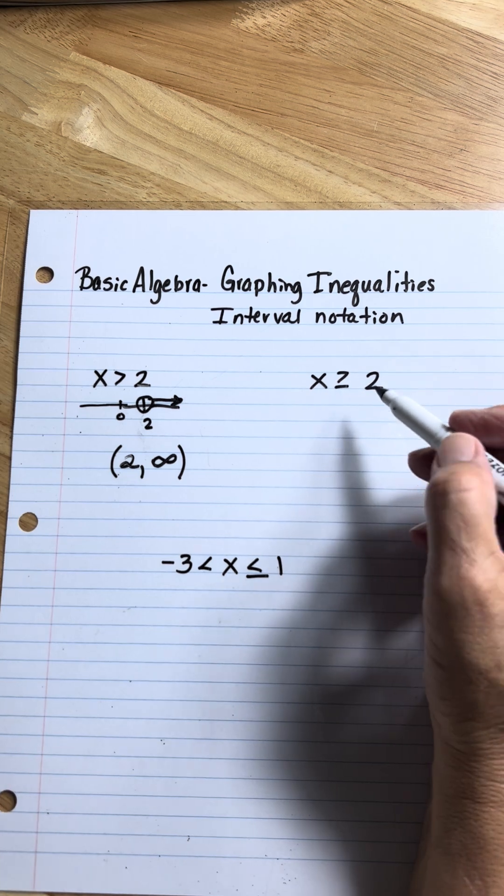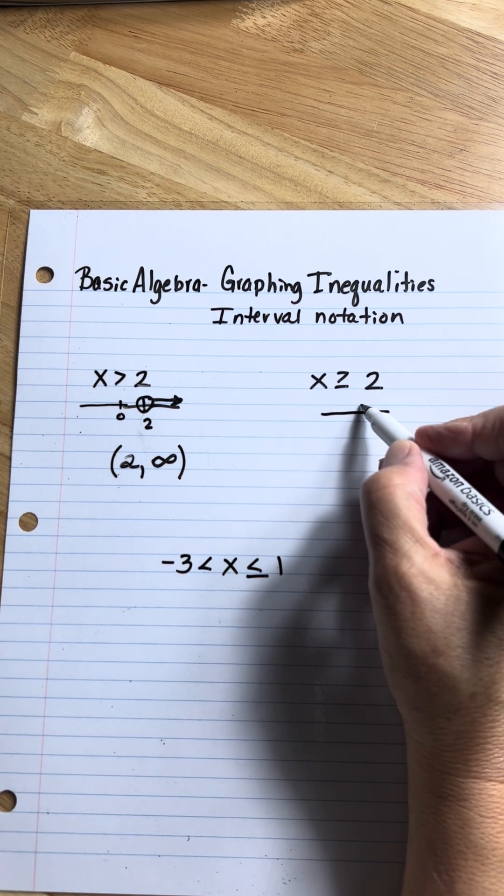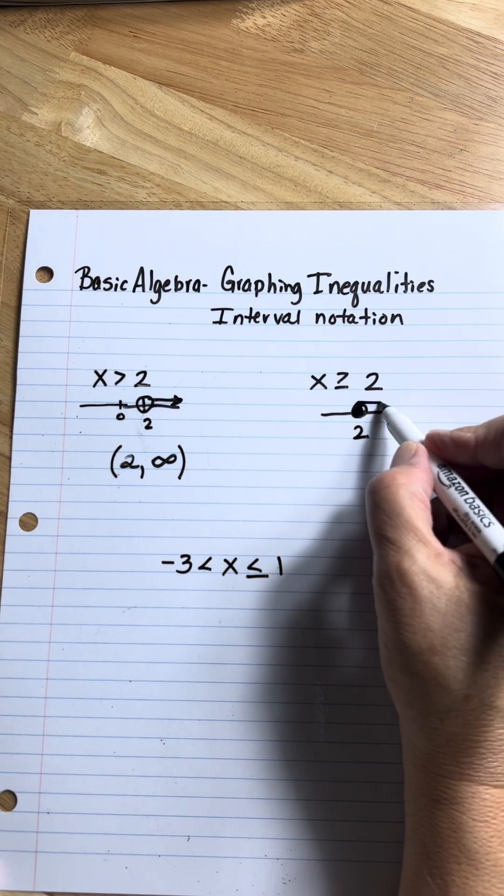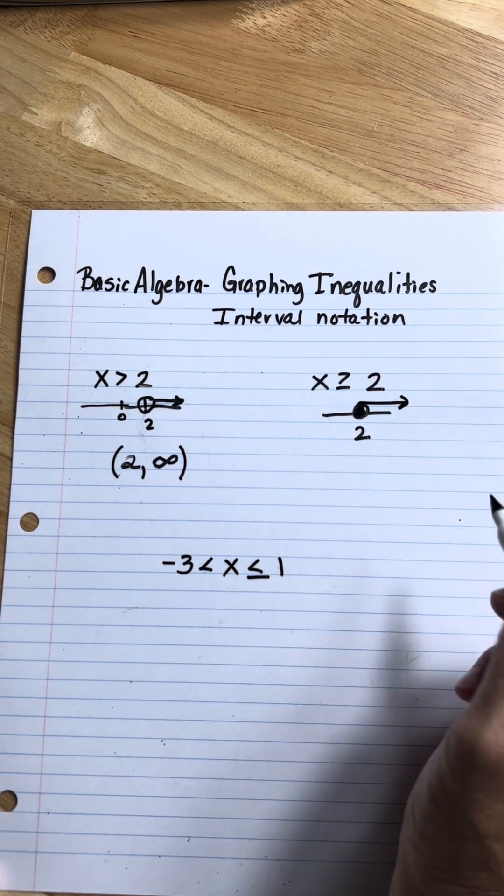Okay, now this one has greater than or equal to. So I'm going to use a solid dot on it. It's greater than, so it also goes to the right. So there's my graph.